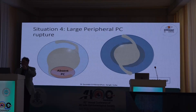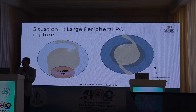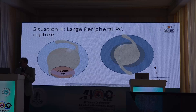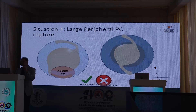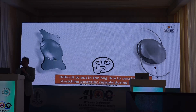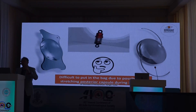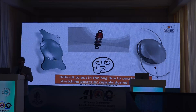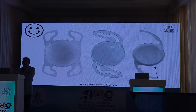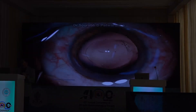For large peripheral PC ruptures, anterior optic capture is an option in limited cases. Regarding IOL design: certain lens designs are suitable for in-bag placement even with PCR. However, avoid plate-haptic or three-piece IOLs when there is a PC rupture, as they will stretch the PC further and may extend the rupture. C-loop or modified C-loop designs are more suitable for in-bag placement despite PCR.